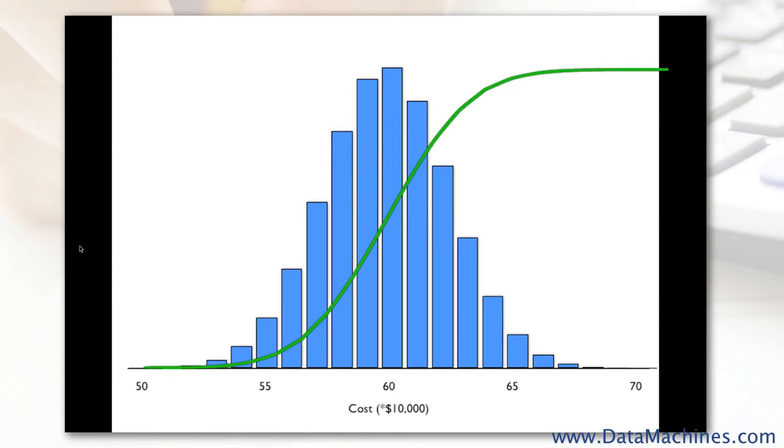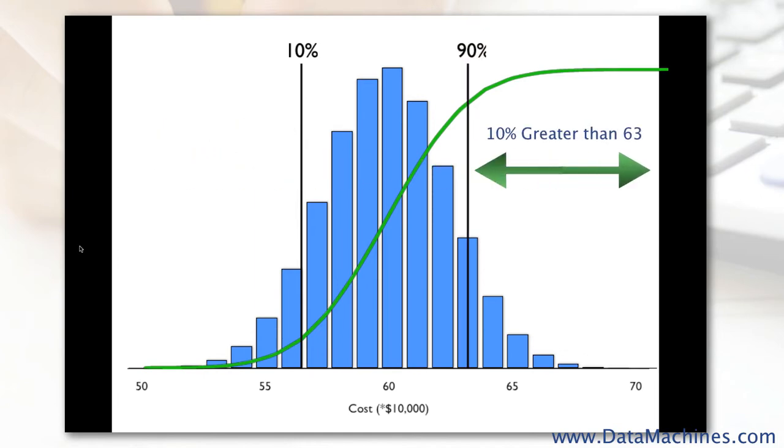Based on the model, we can see that there is a 10% chance that it is going to be less expensive than 56, and a 10% chance that it is going to be more expensive than 63, which tells us that there is an 80% probability that it is going to cost between 56 and 63, with the most likely value around 60, which is the median.